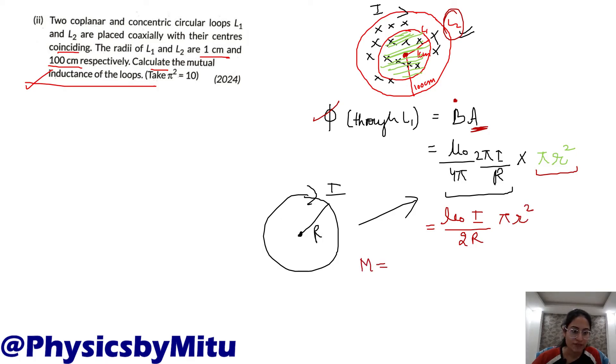This will be μ₀I/2R times πr². Now what is mutual inductance? It is flux upon I. So divided by I you get μ₀πr²/2R. Now I will use this formula and calculate M.